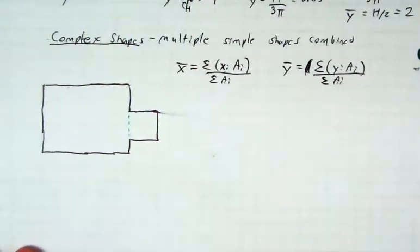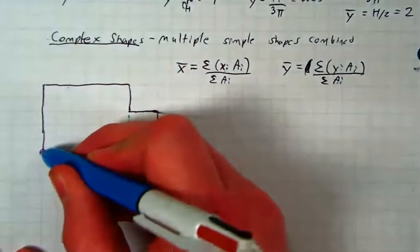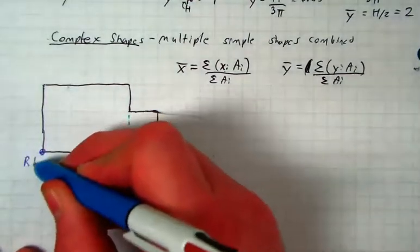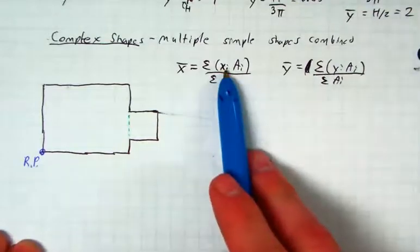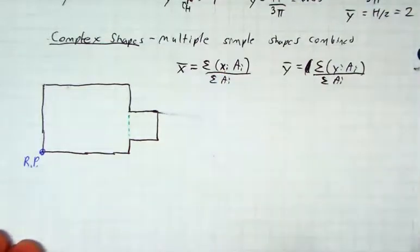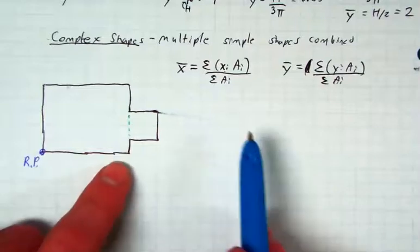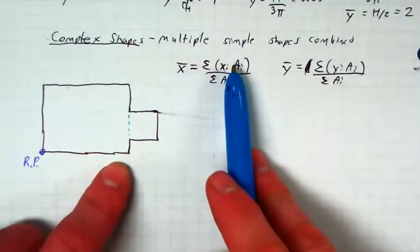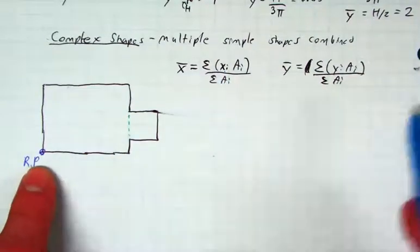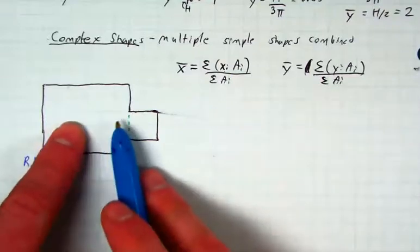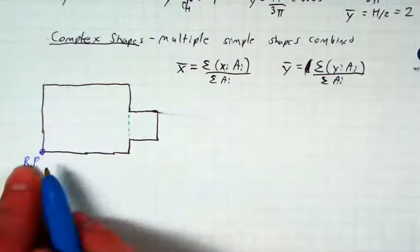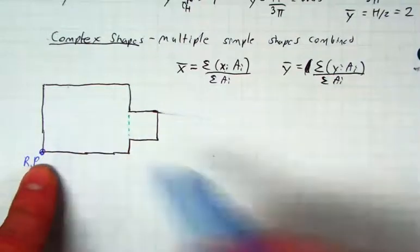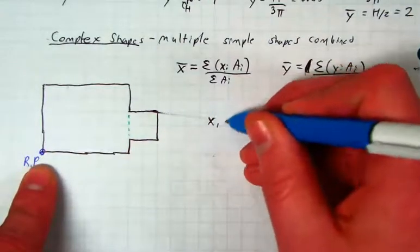Now, let's give ourselves a reference point. And again, for consistency's sake, I'm going to put it at the bottom left. When I say x individuals, what I mean is the individual x's distance from the reference point. So look at the first shape, the first individual shape. How far away would its centroid be from my reference point? Three. So our x1 equals three.